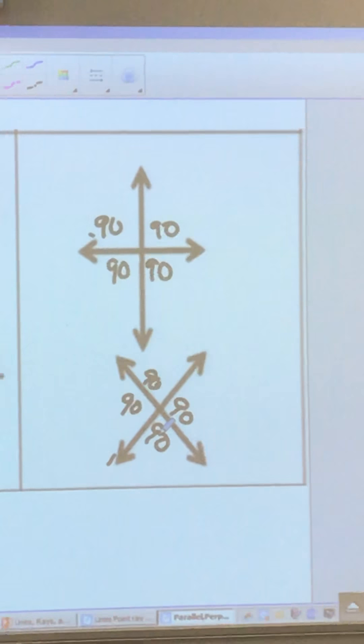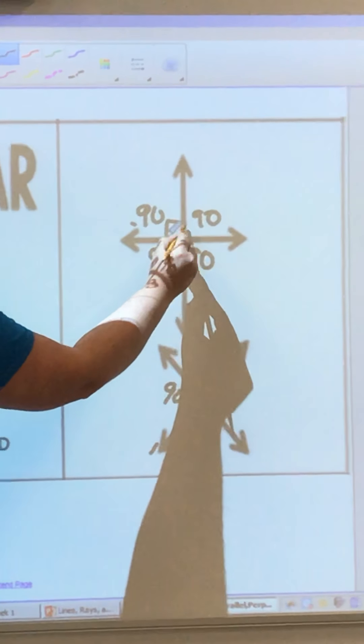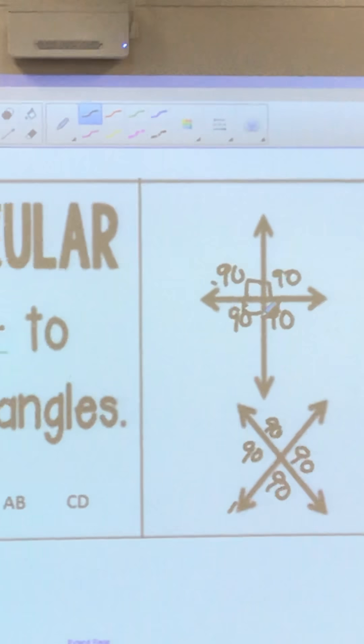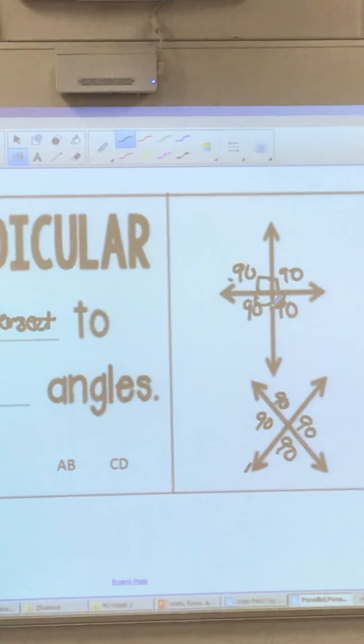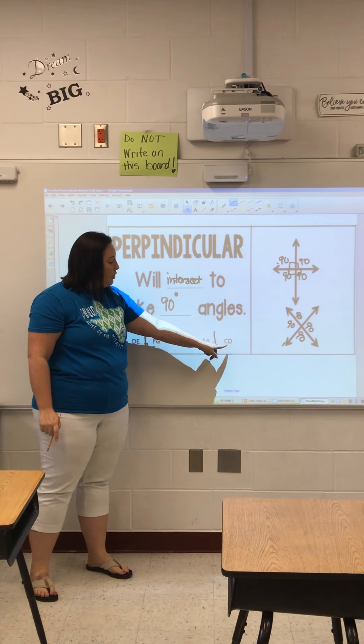Remember, perpendicular means that it intersects and makes right angles, and you can also see that by drawing the squares in the corners to identify that it's also a right angle. Now, the symbol for perpendicular is going to be an upside down T, because if you look at the symbol of it, you're going to see that in the corner, you can also find a right angle, or 90 degrees. So, the symbol for a perpendicular line, when labeling it, is an upside down T. I would read this as line AB is perpendicular to line CD.